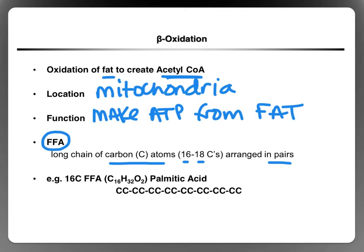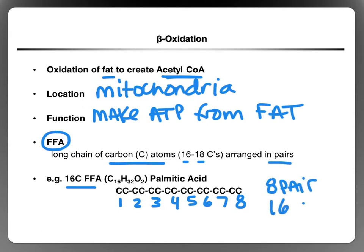For this recording, we are going to use a 16-carbon FFA as the example. We have a total of 16 carbons arranged in pairs, so we have 8 pairs and a total of 16 carbons.